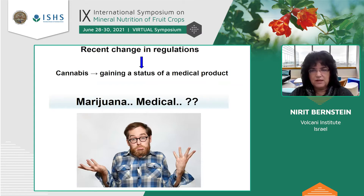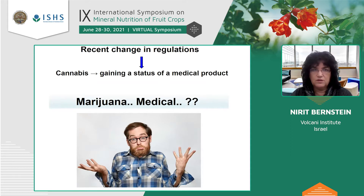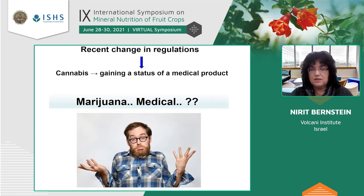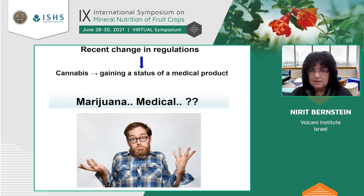Until recently, with the change of regulation, there was hardly any legal research on cannabis since 1961, when an international treaty was signed that banned use of cannabis for everything, including research. Then in Israel in 2016 it became legal, we started having an ability to research and study the plant, and it gained status as a medical product. But it was very difficult to start supplying it to patients because there was almost zero knowledge about how to cultivate it — plant sciences, agronomy, physiology — because it hadn't been studied since the 1950s.